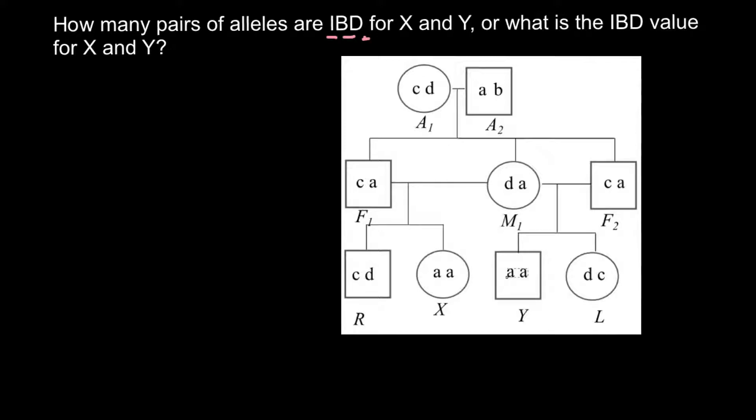We have individual X here and Y, and now we have to find the IBD index. There can be an IBD index or IBS index: identical by descent or identical by state. I will return to explaining the difference, but now I want to explain the value here we can see.